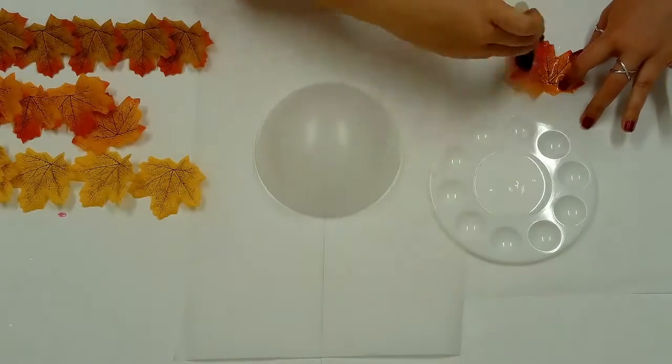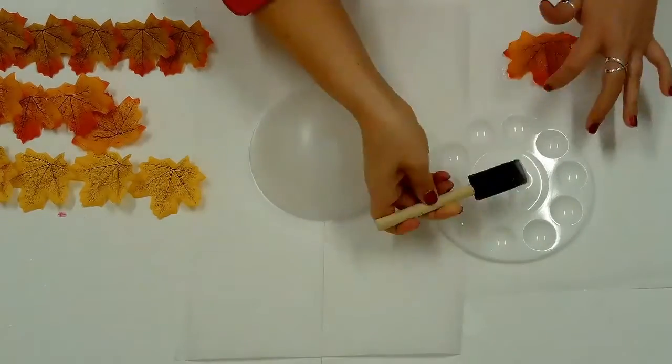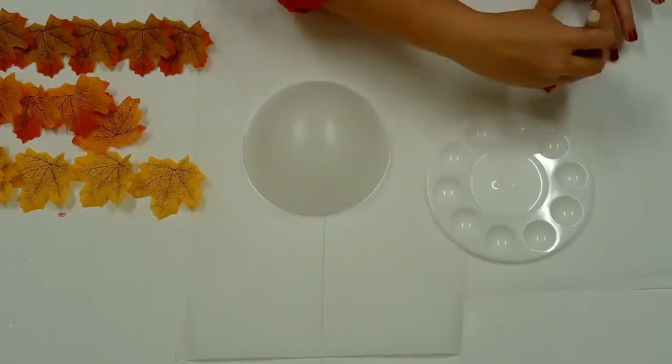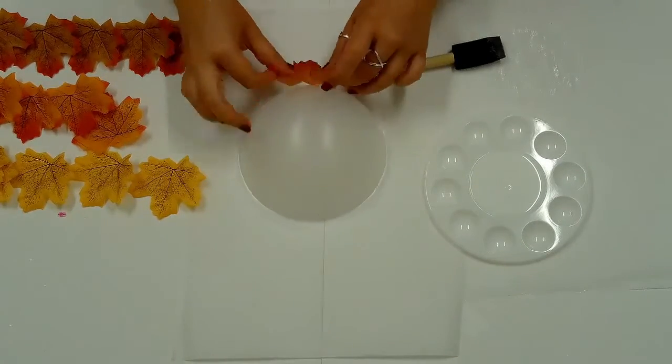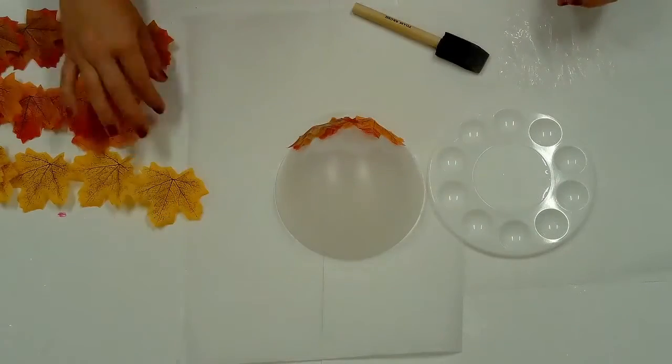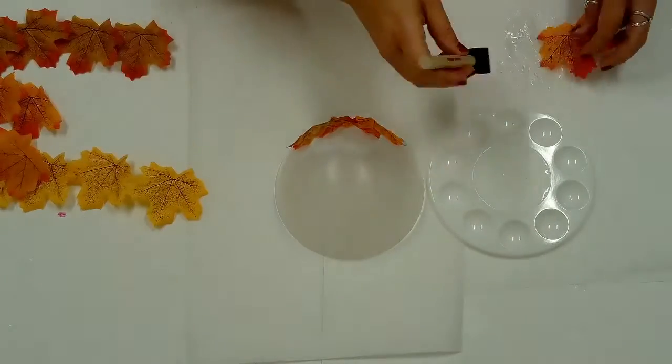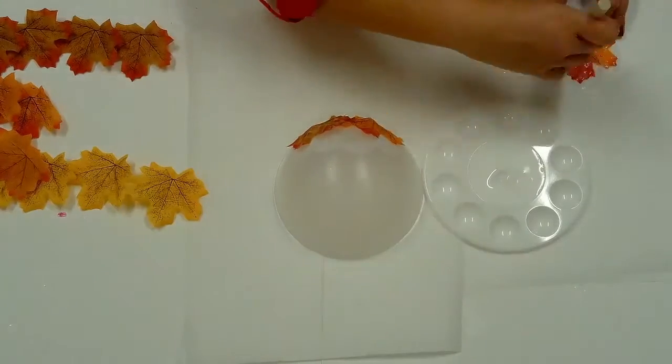Apply a layer of glue to both sides of the artificial leaves and place on the bowl form, working from the rim of the bowl up to the top. Place the leaves slightly overlapping, leaving small gaps between the leaves.